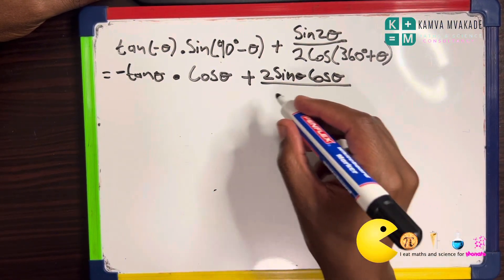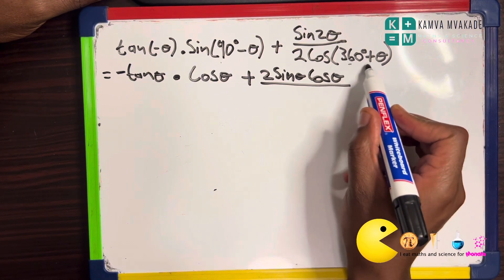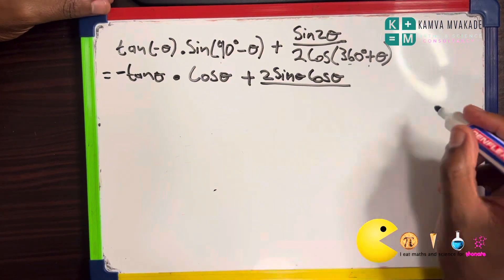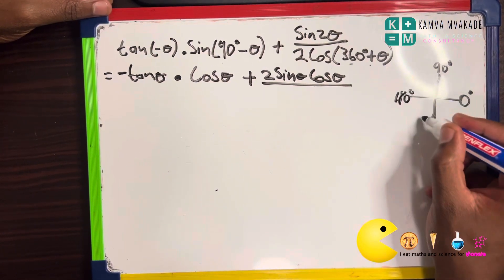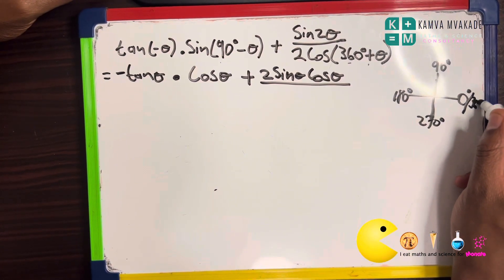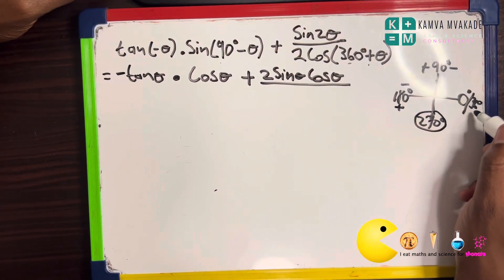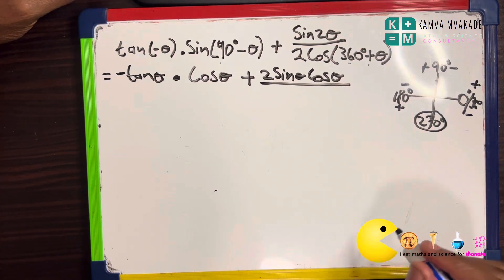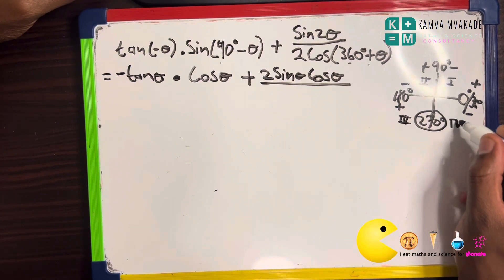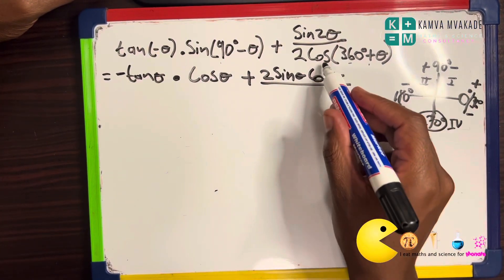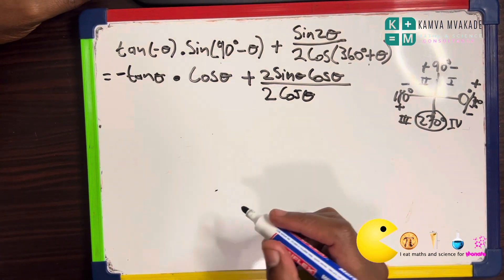Now for cos of (360 degrees plus theta): 360 plus is in quadrant one. Our quadrants go from 0°, 90°, 180°, 270° to 360°. The notation 360 plus puts us in quadrant one, where all trig ratios are positive. So cos(360° + theta) simply equals cos theta. We now have 2cos theta in the denominator.